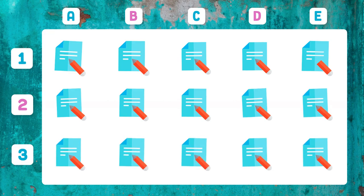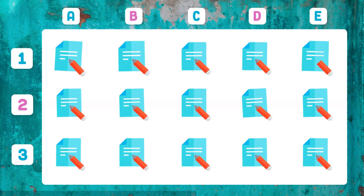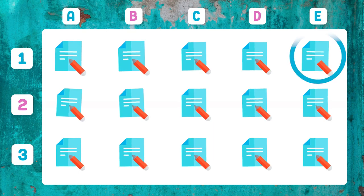Which of these images has a different one from the rest? Look at the tip of the pencil in position 1E.